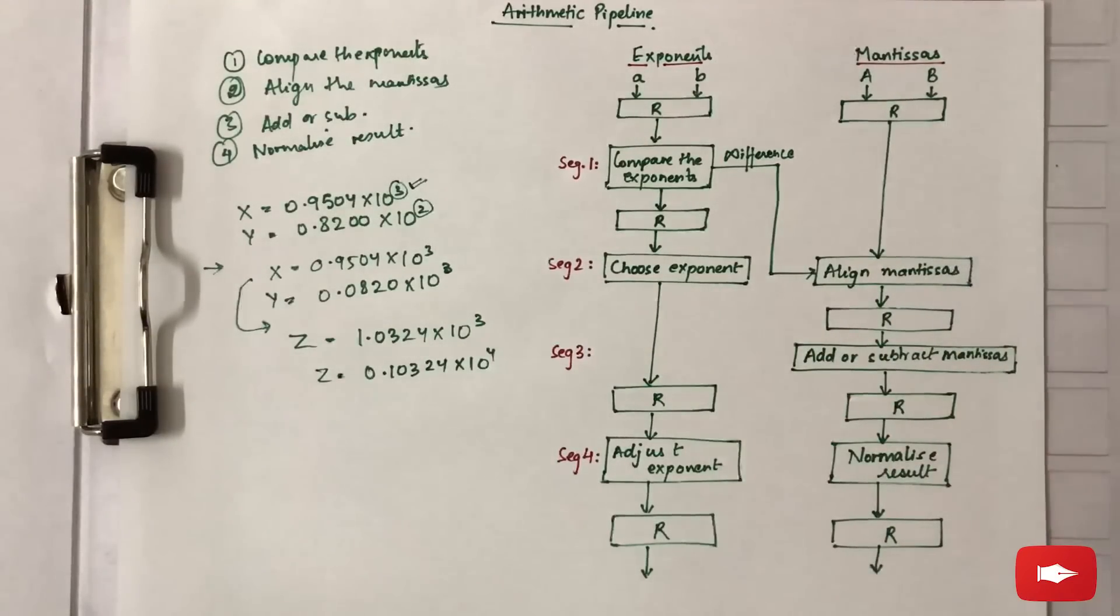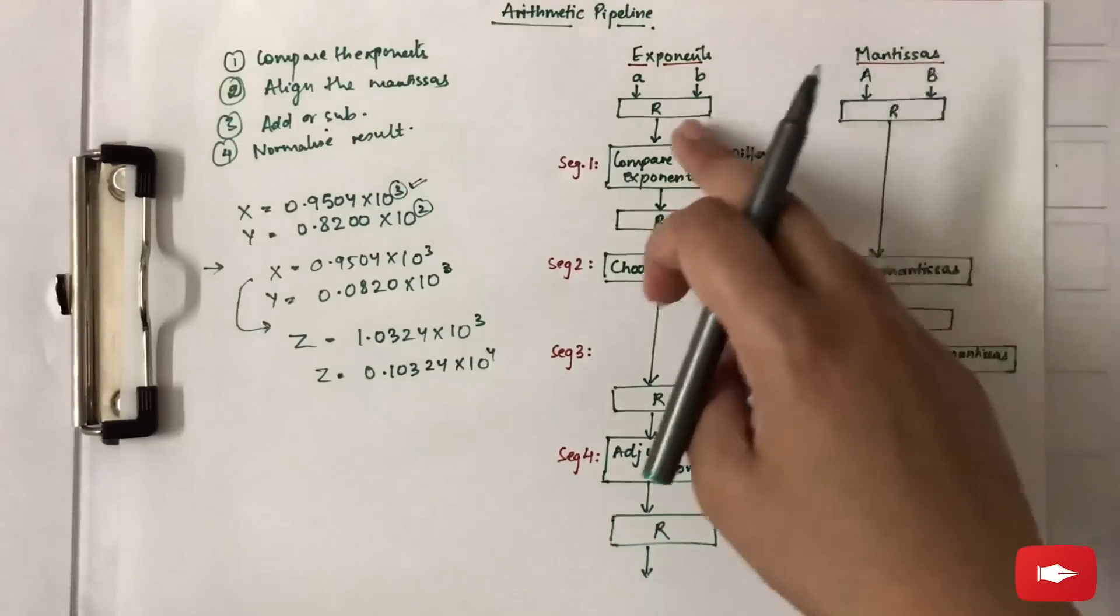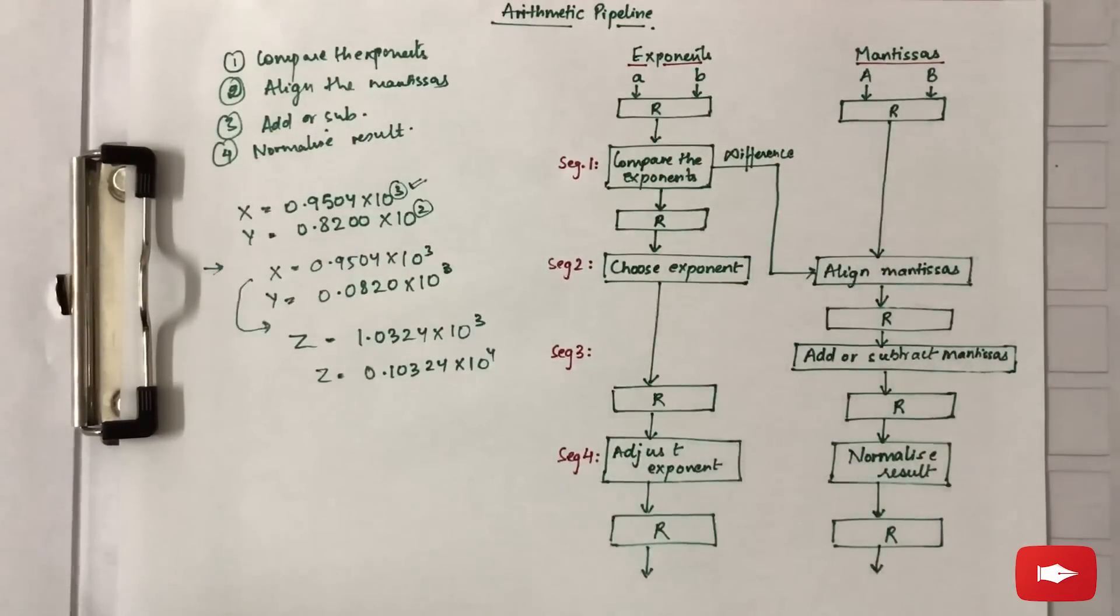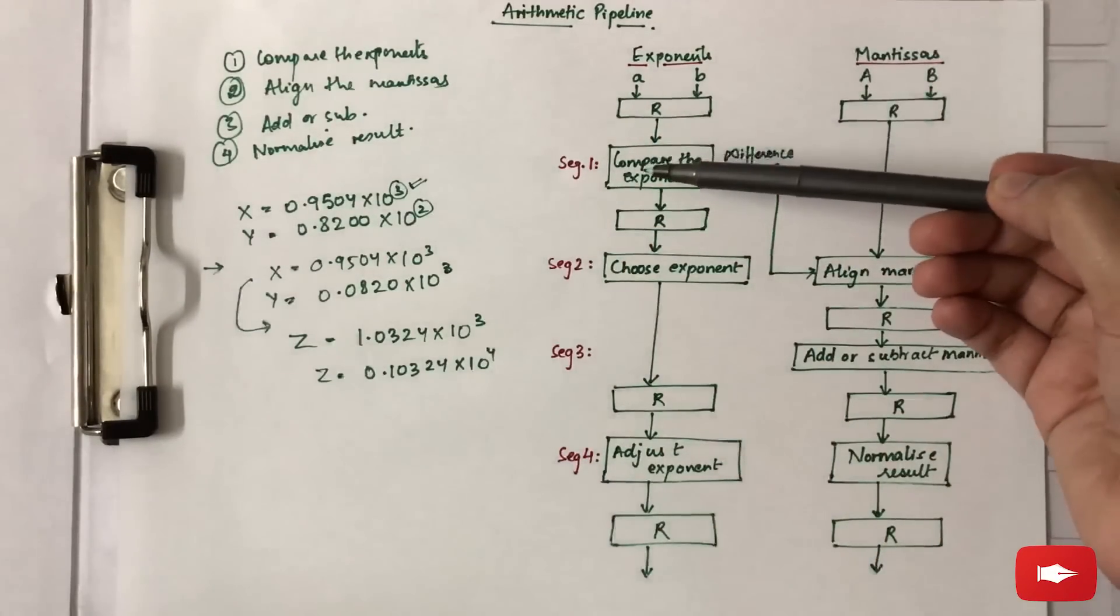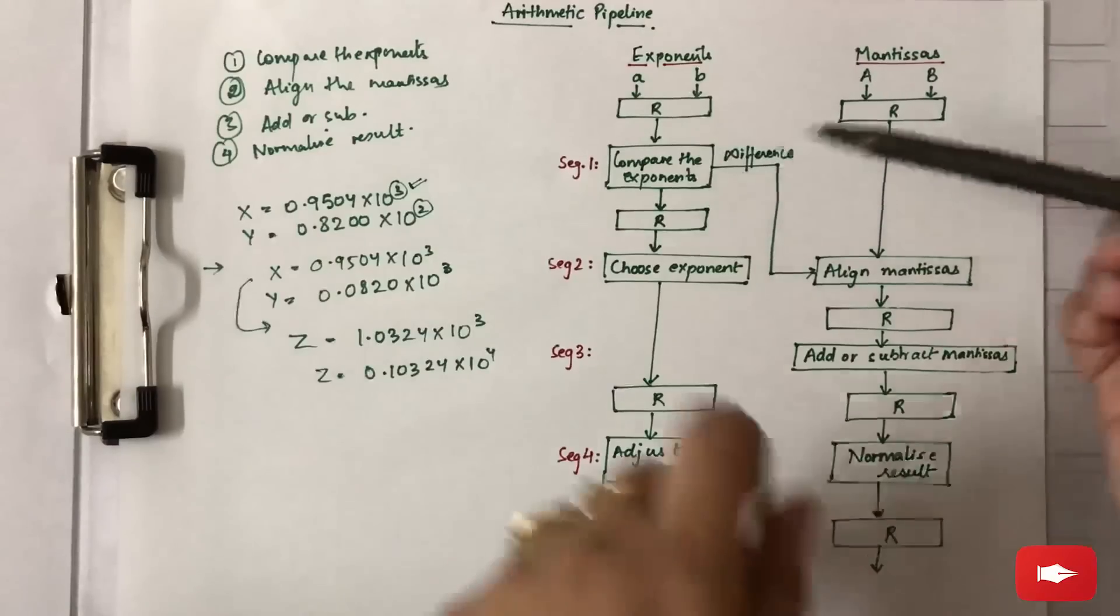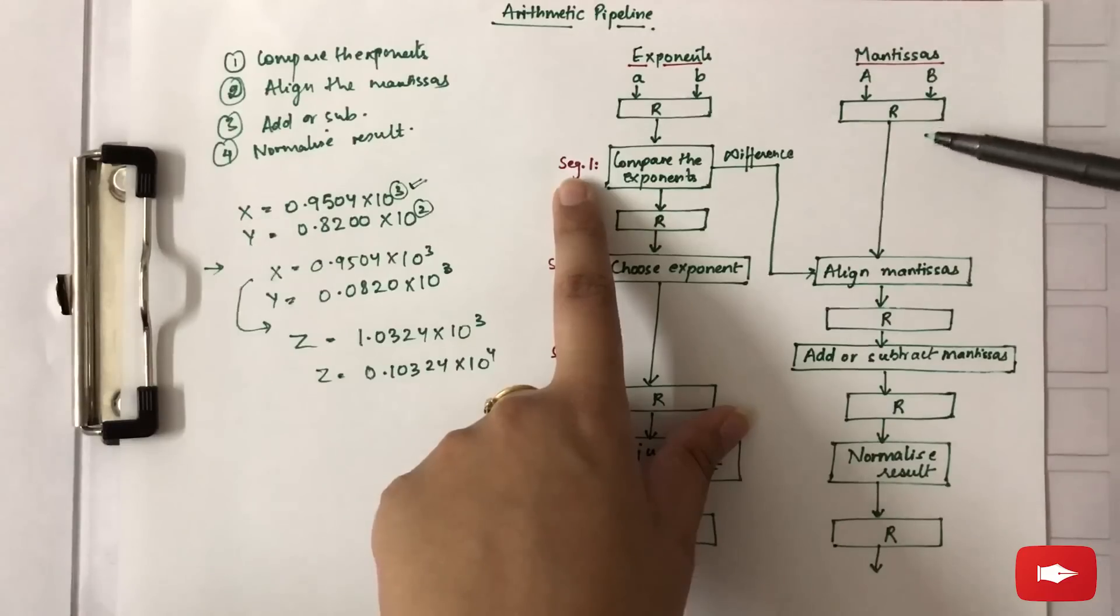This can be illustrated by this diagram. This is an arithmetic pipeline where we have exponents and mantissas. The intermediate results in a pipeline are stored in registers R. First, we compare the exponents in segment 1, meanwhile nothing is done to the mantissas.